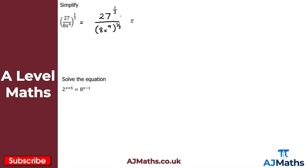The numerator is easier to work with — for a fractional power, the denominator tells us what root we're taking, so this is the cube root of 27, which is 3. For the denominator, we consider it in two parts. First, 8 to the power of a third: the cube root of 8 is 2. Then x to the 9, raised to the power of a third — that's a power raised to another power, so we find the product: 9 times a third equals 3, giving us x to the power of 3.